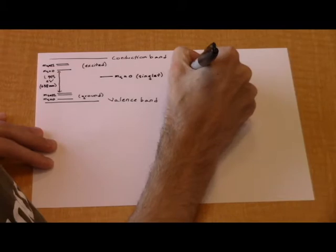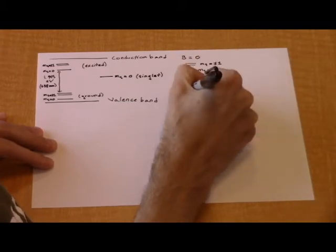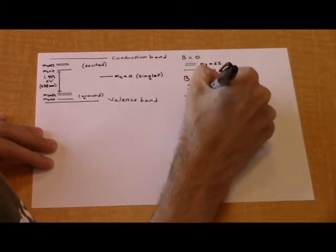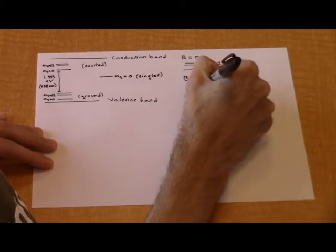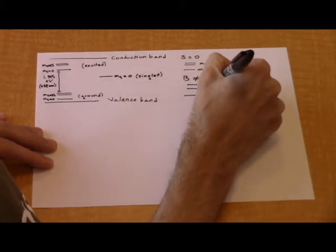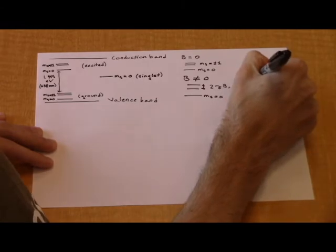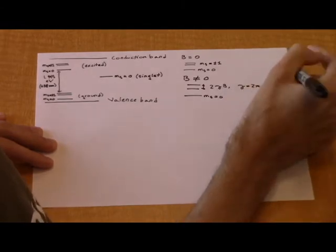Things become interesting with the N-V center when a magnetic field is introduced. We see that the degenerate plus and minus 1 sublevels have now split in the magnetic field due to the Zeeman effect, with the amount of splitting directly proportional to the strength of the magnetic field.